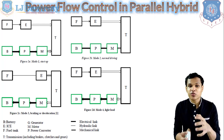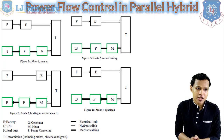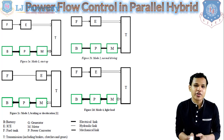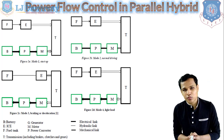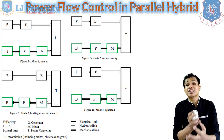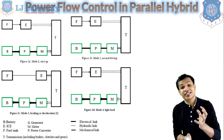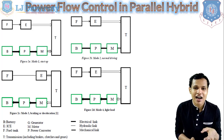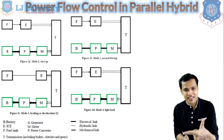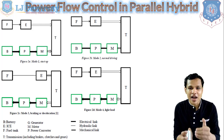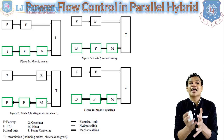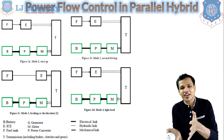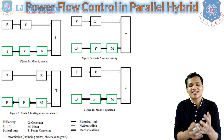Now let's look at the power flow control in the parallel hybrid system, which has a slightly different approach. Mode 1, shown in figure 2A, is the startup or starting acceleration of the vehicle. At that time the load on the vehicle will be maximum, so the transmission system will require power from both the battery and the IC engine simultaneously. Both systems will supply power to the transmission system at the same time during acceleration.